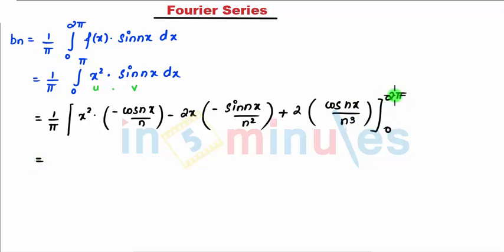So I can easily substitute my upper limit, which comes to be: when you put upper limit, that becomes cos 2nπ, that is 1, and here x², that becomes minus 4π² divided by n. Substituting upper limit, sine 2nπ is 0, so my second term is 0, and cos 2nπ